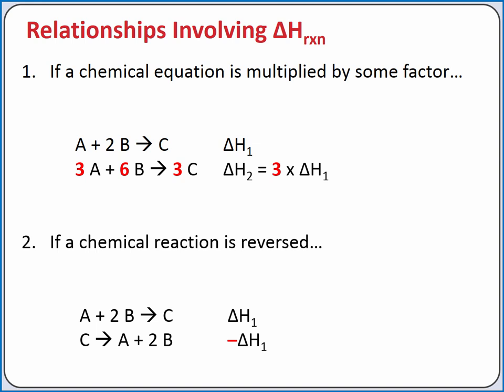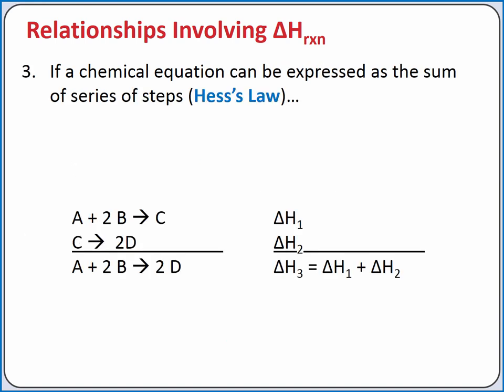We saw this when we discussed endothermic and exothermic processes. If the forward reaction is endothermic, transferring thermal energy from the surroundings to the system, then the reverse reaction is exothermic, transferring thermal energy from the system to the surroundings. If a chemical equation can be expressed as the sum of a series of steps, then the change in enthalpy for the overall reaction is the sum of the changes in enthalpy for the individual steps.